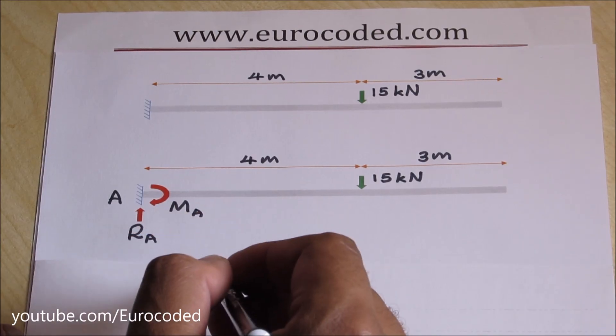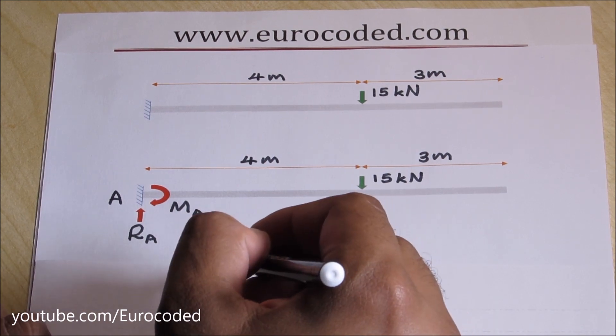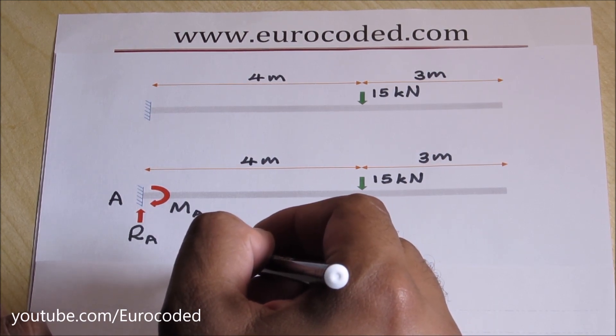Now I'm going to calculate RA by looking at vertical equilibrium and MA by looking at moment equilibrium.